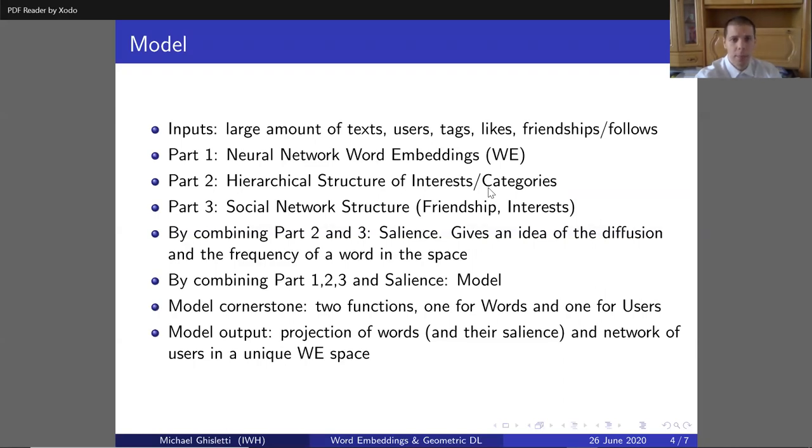Then a social network structure of friendship and interests. The second and third part are combined to create salience. This is a new idea that gives the idea of diffusion and frequency of a word in the space. By combining all those parts, we get to the model. The model contains two functions, one for words and the other for users. Model output is a projection of words under salience and a network of users in a unique word embedding space. This is what is really new in my project.